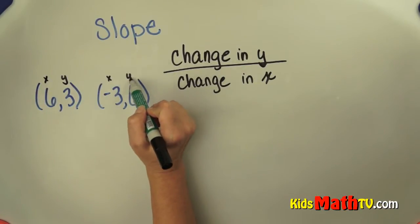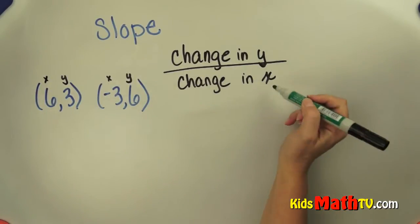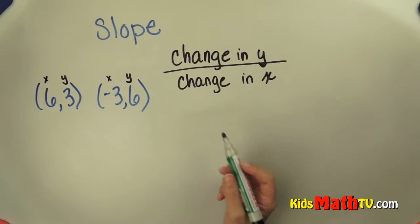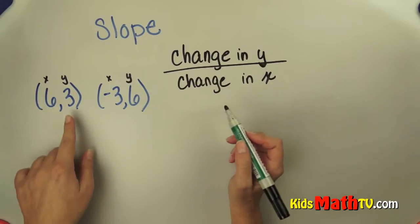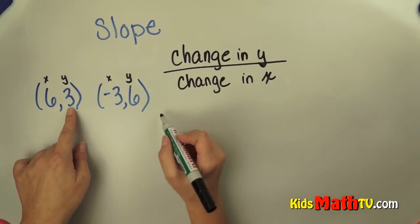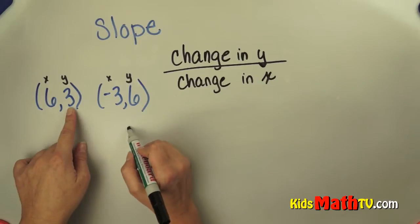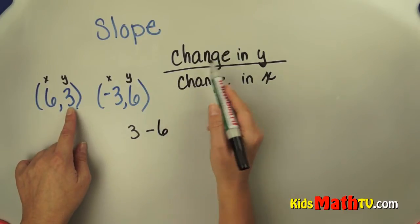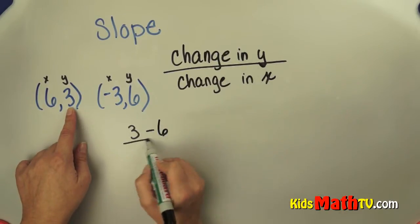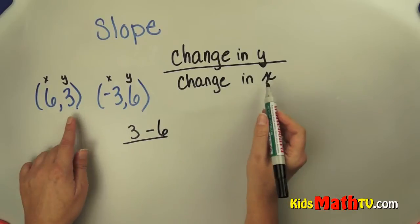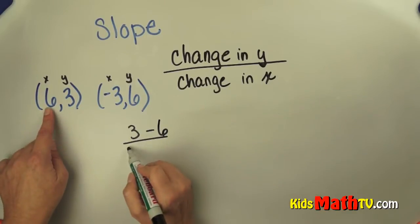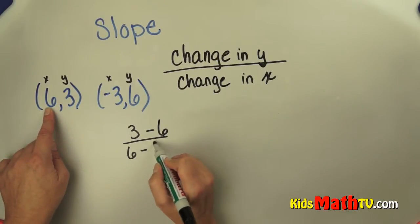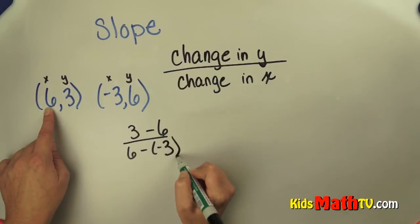I'm going to label those so I don't get confused, because we're going to do y's first. So change in y means to subtract. We have 3 minus 6 — that's the change in y — over the change in x: 6 minus negative 3.